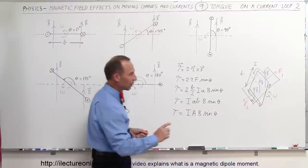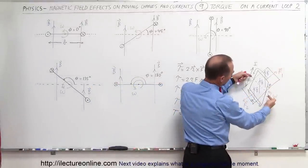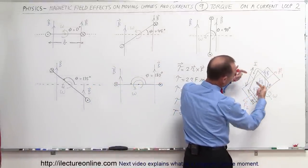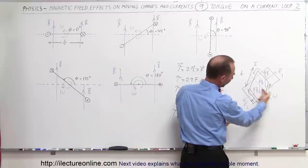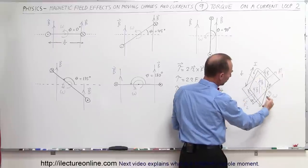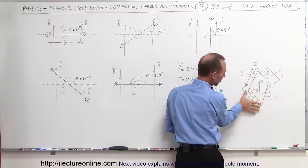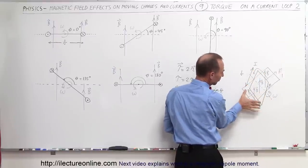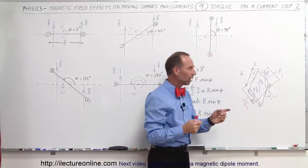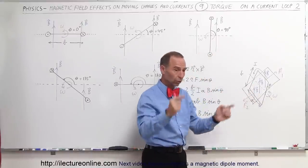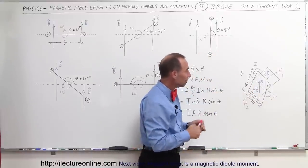So let's say we have a plane right here — this is the plane — and here we have a current loop that's rotating around about the center of the loop. Notice that the distance from there to there is B, the distance from there to there is A, so that the area of that loop, the cross-sectional area, would be A times B.